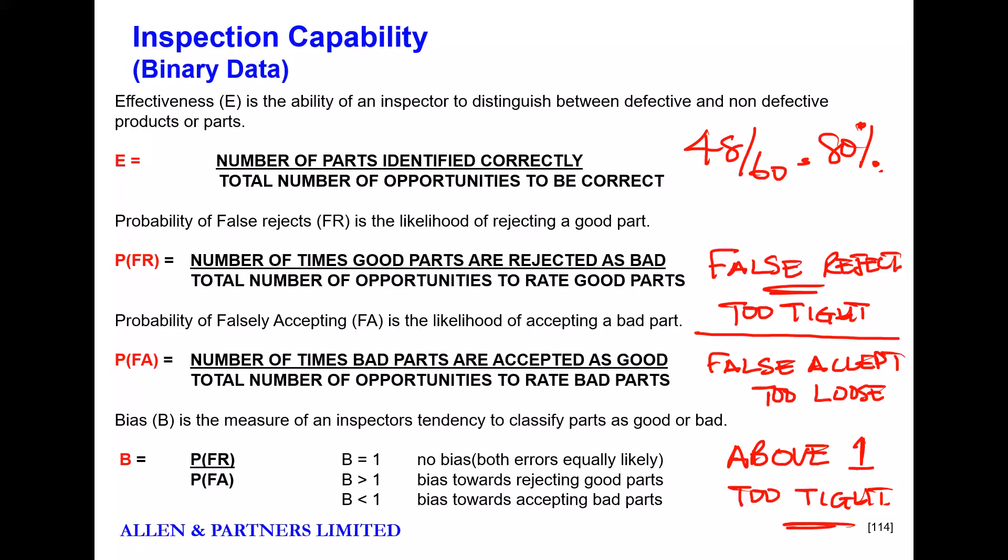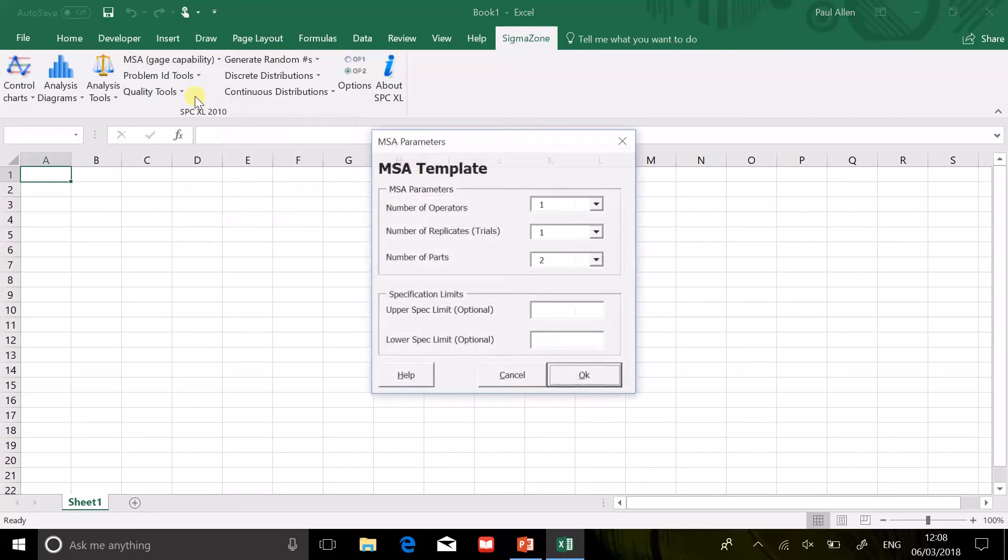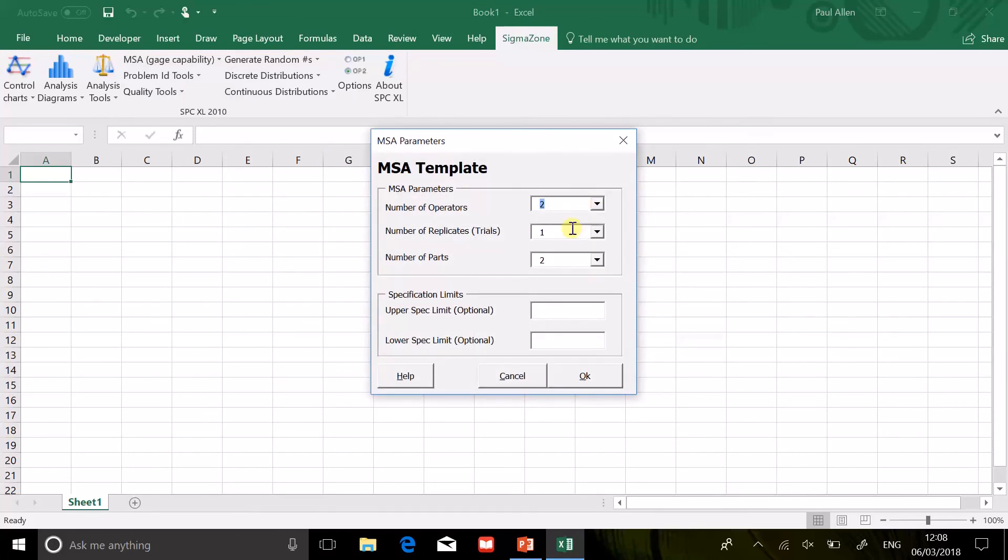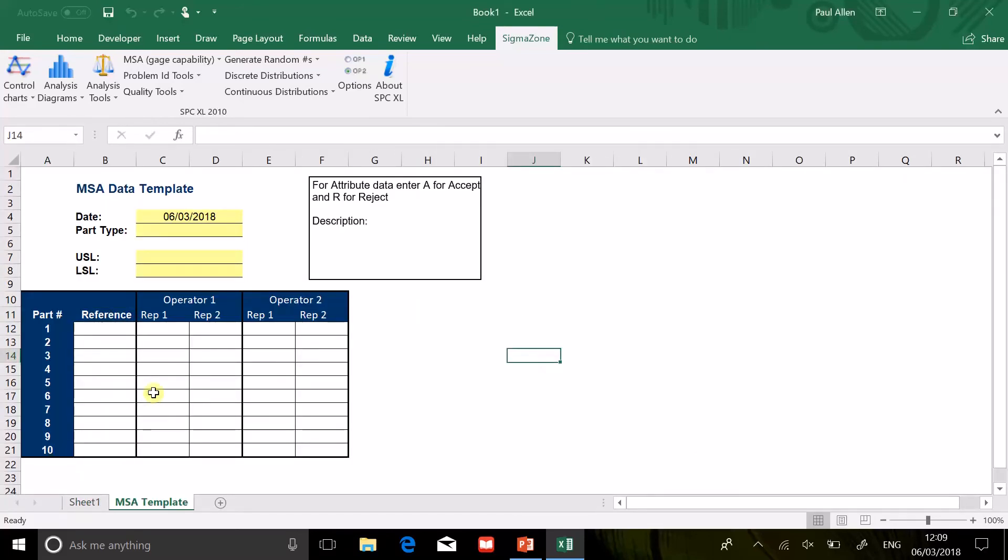Now the software is going to do this for you. So let me show you the software doing this. So let me just go over to Excel. And I've got SigmaZone waiting for me here. I'll show you how the whole thing gets set up. So you would go gauge capability. You're going to create a template. And it says, how many operators do you have? Let's just say we have two operators. How many trials are they going to do? How many repeats? Let's say they're going to repeat the test twice. And let's say we're going to give them ten parts. We click OK.